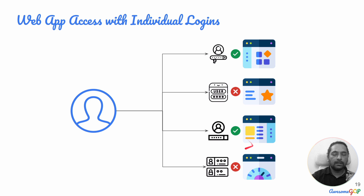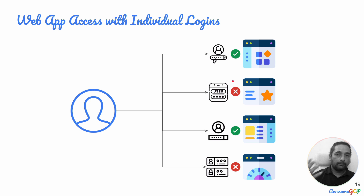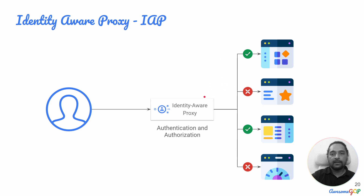One way to control access individually for each application is to provide separate credentials for each. So if a user wants to access application one, they have a username and password for that; for application two, a different one — and if they don't have one, they can't access it. Obviously, for a company with hundreds or thousands of applications, it becomes very difficult to have individual credentials for each, and the effort in terms of IT and application development becomes excessive. What the Identity-Aware Proxy provides is a central point of identity management for authentication across these web applications.